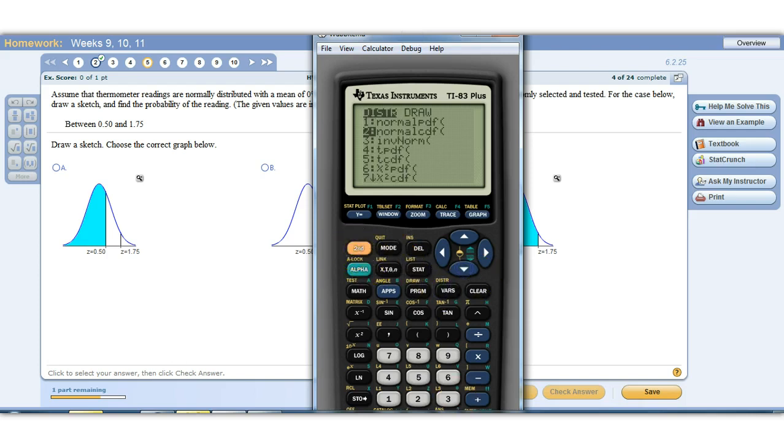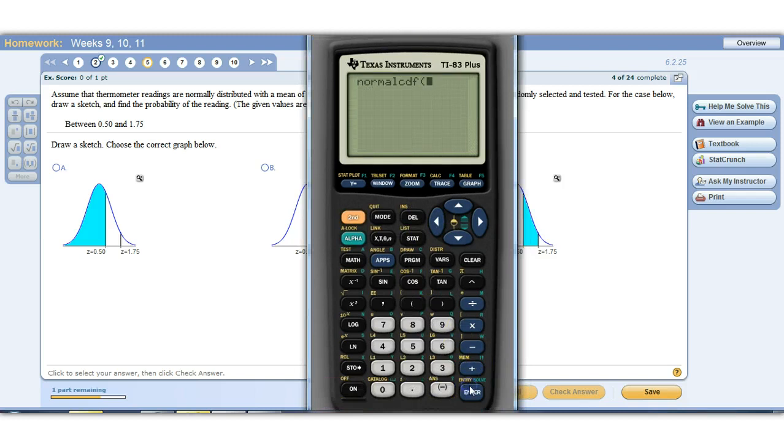Normal CDF. Lower number is 0.5. Our upper number is 1.75. All right. And we close it off. There's our probability. 0.2684 rounded to four decimal places.